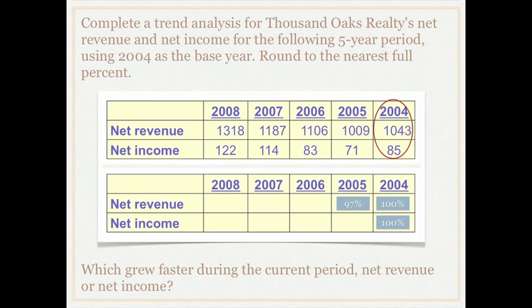For net income, our base year net income was 85, and in 2005 our net income was 71. To find the trend percentage, we take 71 — the net income in the analysis year — and divide that by the net income in our base year, 85. We find that net income in 2005 is 84 percent of what it was in 2004, telling us that our net income fell by 16 percent.